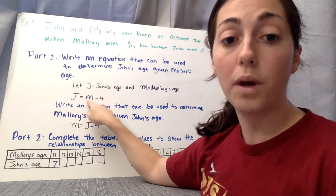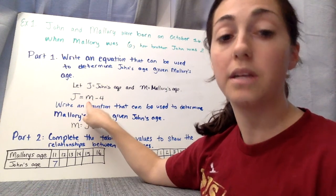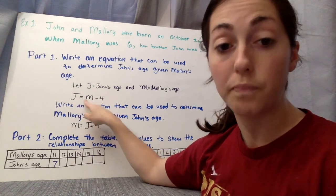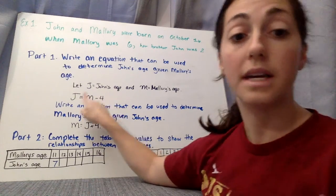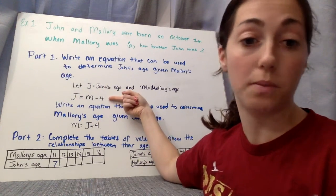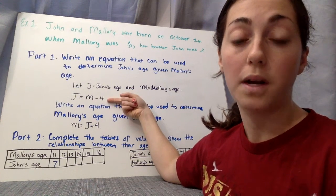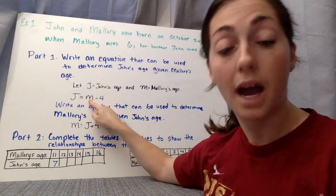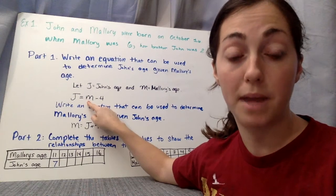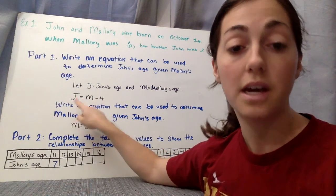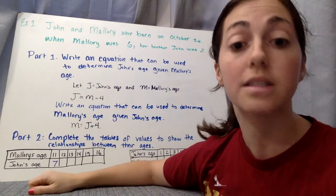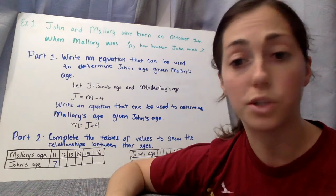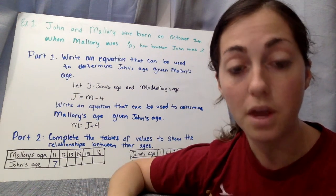j equals, and then you want to think, what do I put in for Mallory that would give me John? So if I put in Mallory's 6, what do I do to 6 to give me 2? Well, 6 minus 4 is 2. So this is our equation, j equals m minus 4. Because if Mallory is 10, I can determine John's age. 10 minus 4 is 6. So when Mallory is 10, John is 6. You can use logistically, if you have a brother or sister, how this would make sense in your life, or just anybody that is older or younger than you.